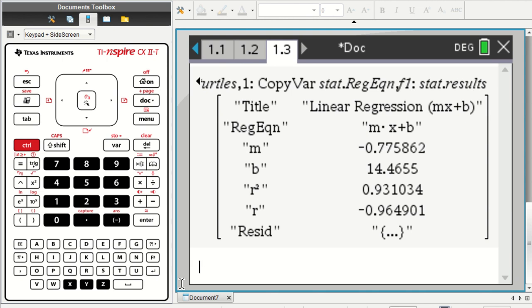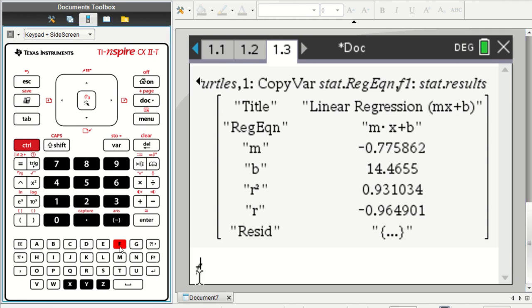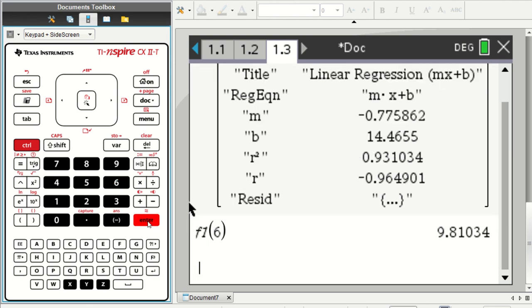And I can type F1 as a new command on the calculation page. And if I'm interested in what's happening after six minutes, I can enter in six there. And we can see that we would expect about 10 turtles to be on the log. 9.8 is the number we see.